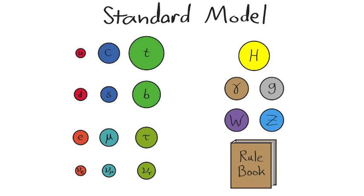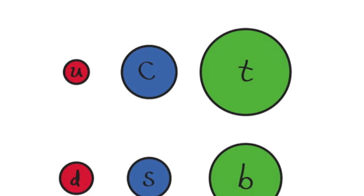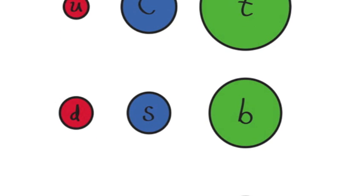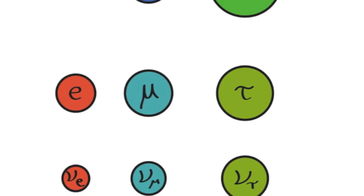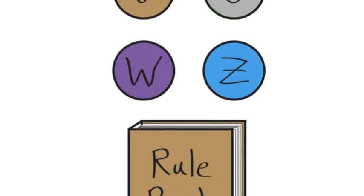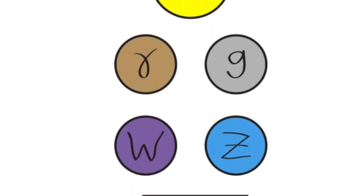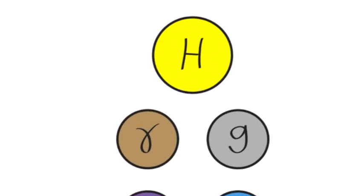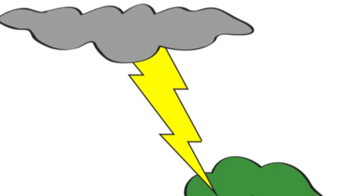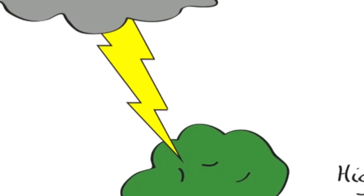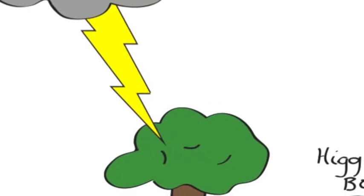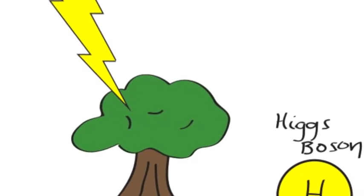The most successful theory of particle physics is called the standard model. It says that everything is made up of a small collection of basic particles, and it tells us how they interact with one another. This theory explains everything from electricity to the existence of the Higgs boson, and it does so extremely accurately.